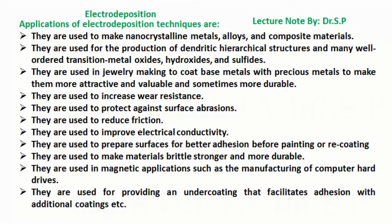They are used in jewelry making to coat base metals with precious metals to make them more attractive, valuable, and sometimes more durable. They are used to increase wear resistance, protect against surface abrasions, and reduce friction. They are used to improve electrical conductivity. They are used to prepare surfaces for better adhesion before painting or recoating. They are used to make materials stronger and more durable.